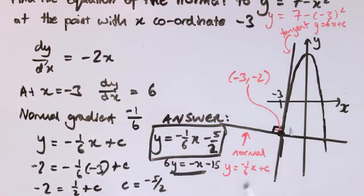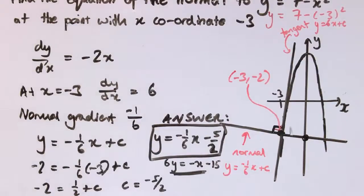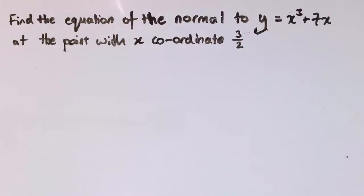It's worth noticing that it's reasonable on our sketch. It looks like this is going to have quite a shallow negative gradient, if my original sketch was reasonably accurate. And it goes through the y-axis at some negative value. So it looks good. Right, let's do another one.